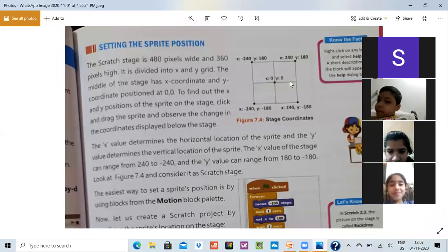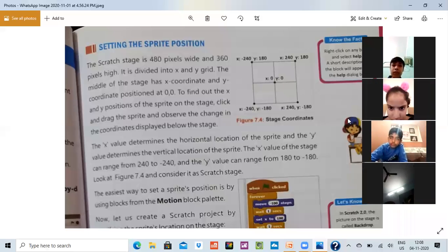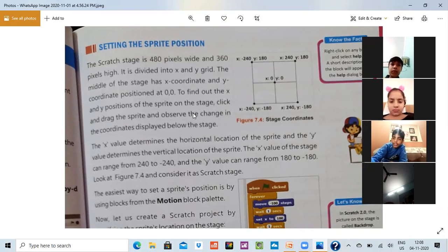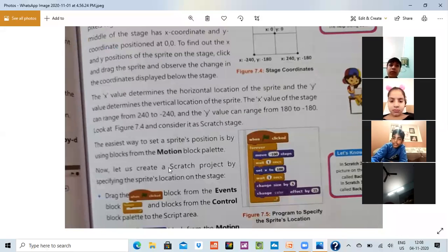Jo line upar ja rahi hai usko Y bolte hain aur jo line horizontal hai, jispe ma'am apna mouse move kar rahi hai, isko X bolte hain. Please pay attention. This line is known as Y and this line is known as X, and the center point coordinates are 0 and 0. The X determines the horizontal location and the Y determines the vertical location of the sprite.